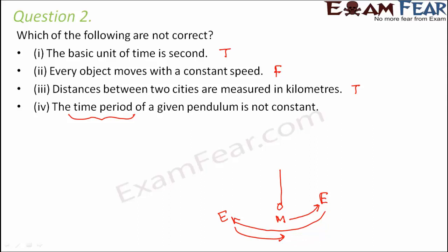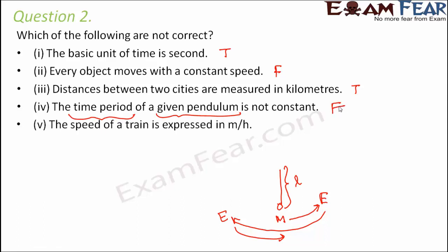For any pendulum, the time period is constant because it only depends on the length of the pendulum. For a given pendulum, the length remains the same, and therefore the time period also remains constant - so that statement is false. The speed of a train is expressed in meters per hour - this is also false, as speed is generally expressed in kilometers per hour or meters per second.